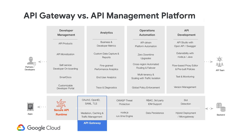What's the difference between an API gateway and an API management platform? An API gateway is a small subset of an API management platform. A gateway does basic things like collect security tokens, but there's a lot more to solving the API problem than a simple gateway can offer — an API management platform does much more.